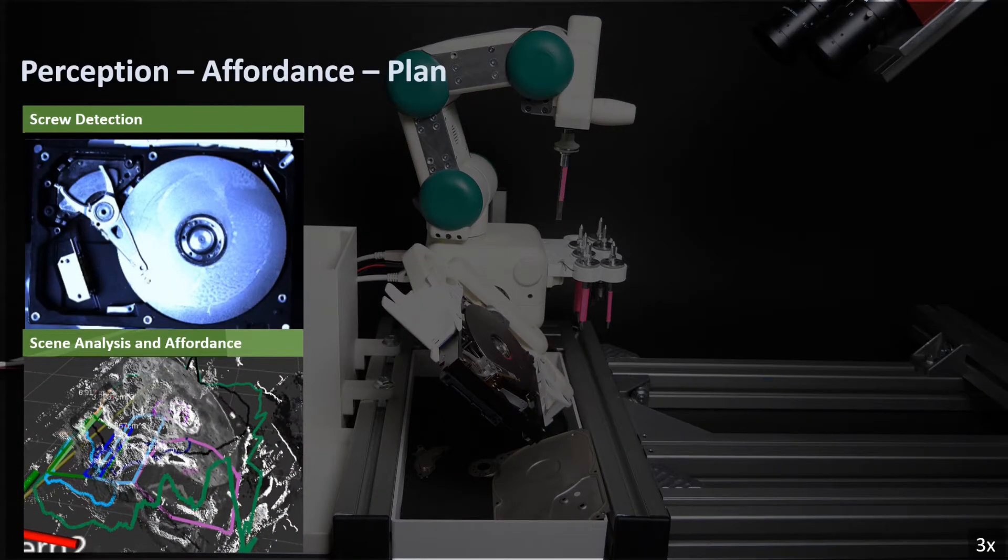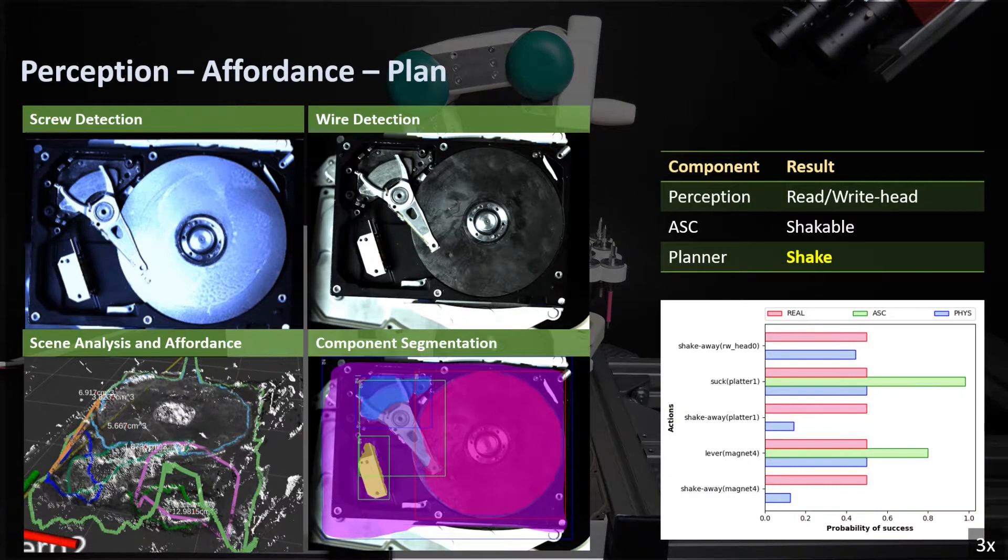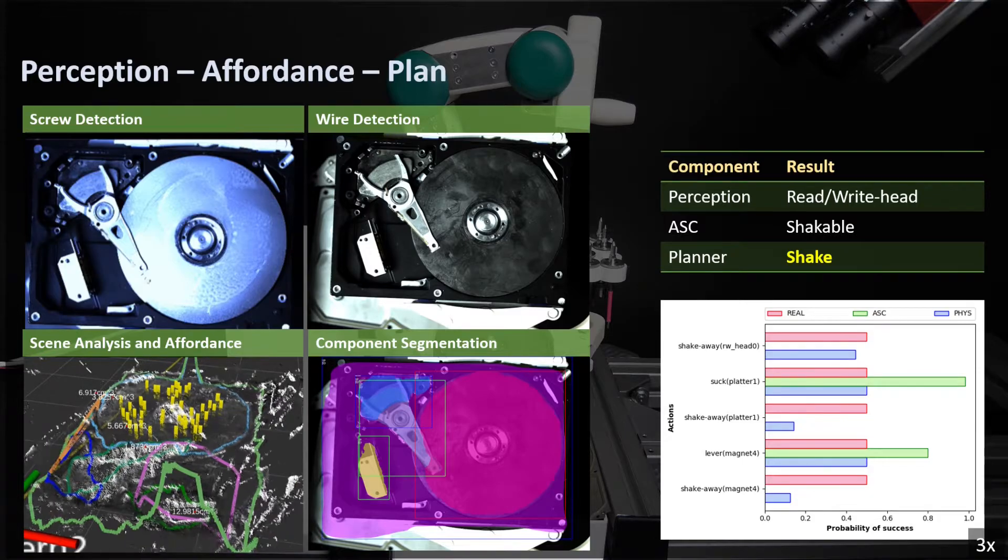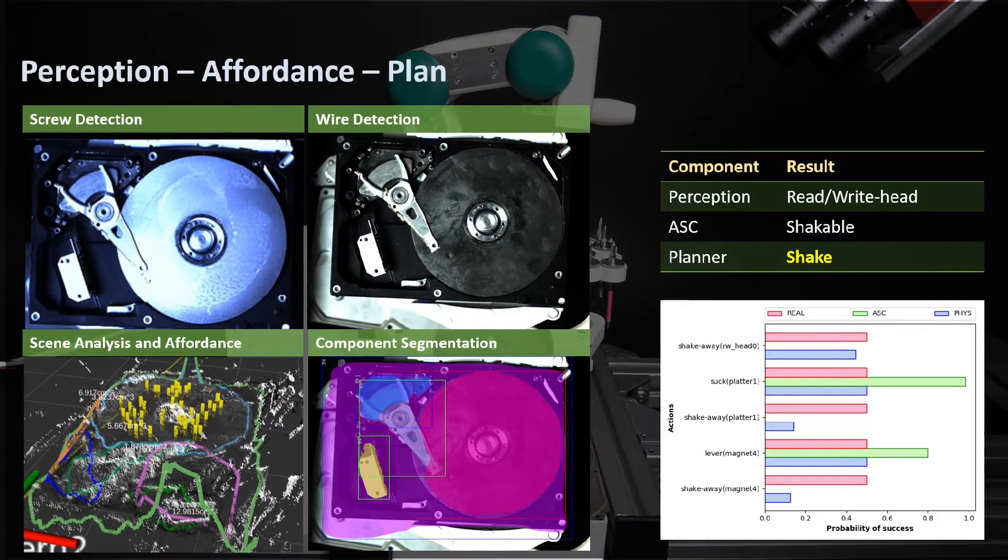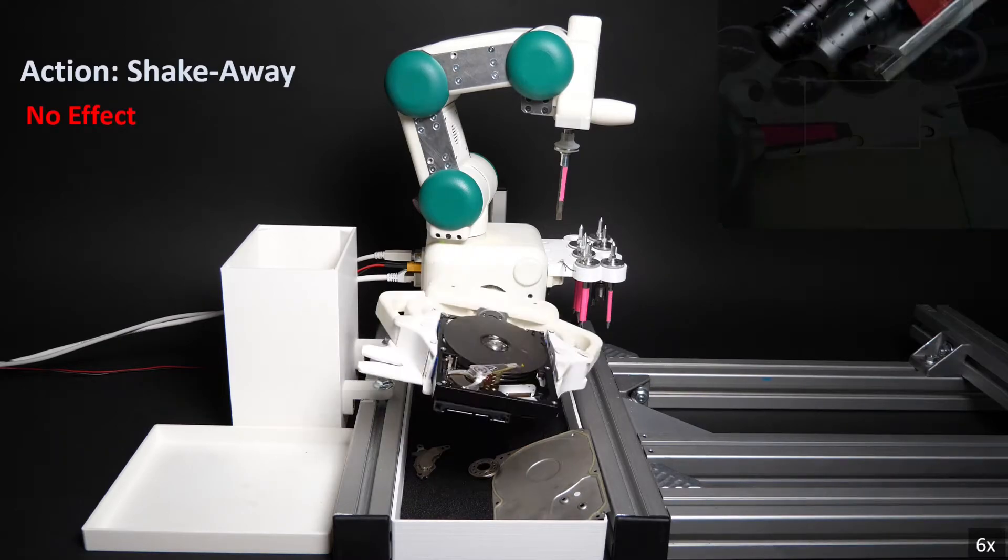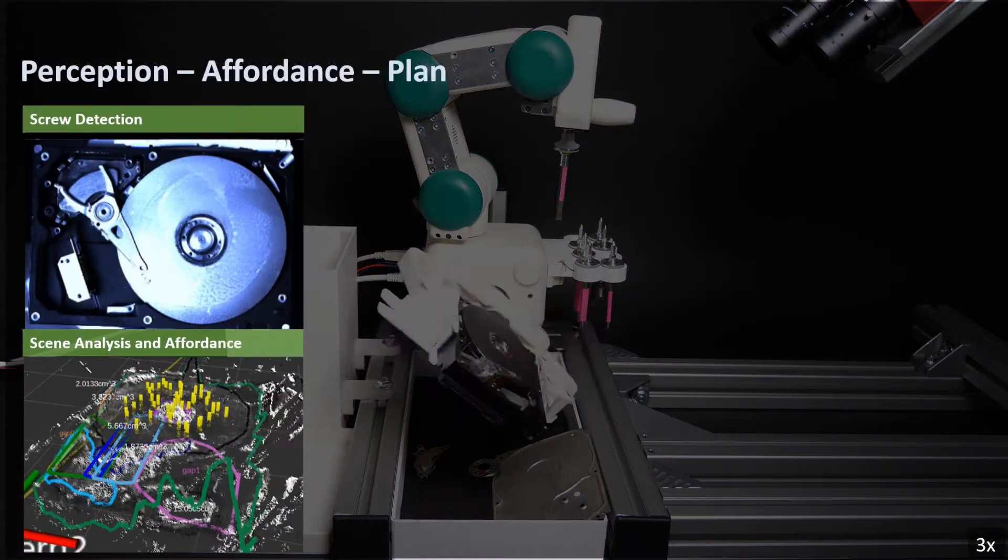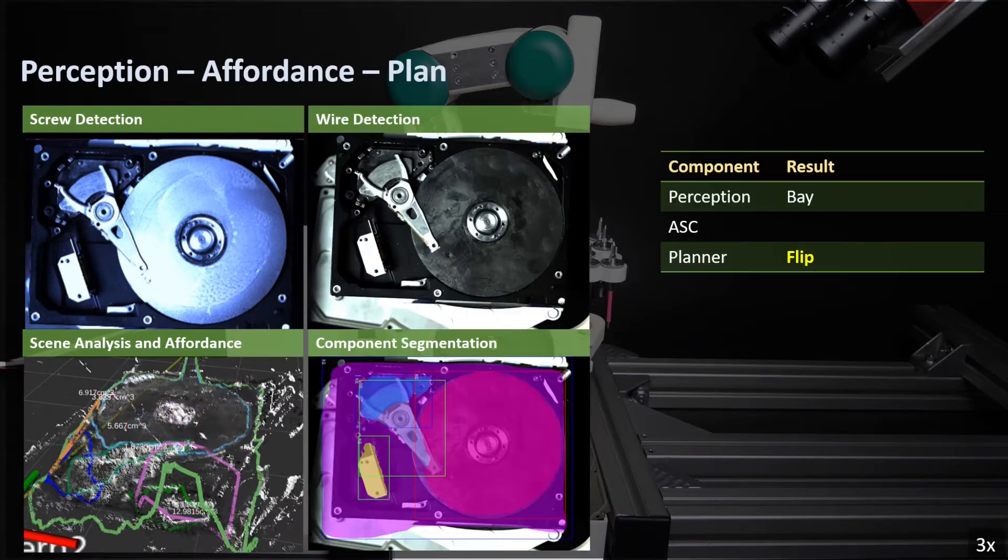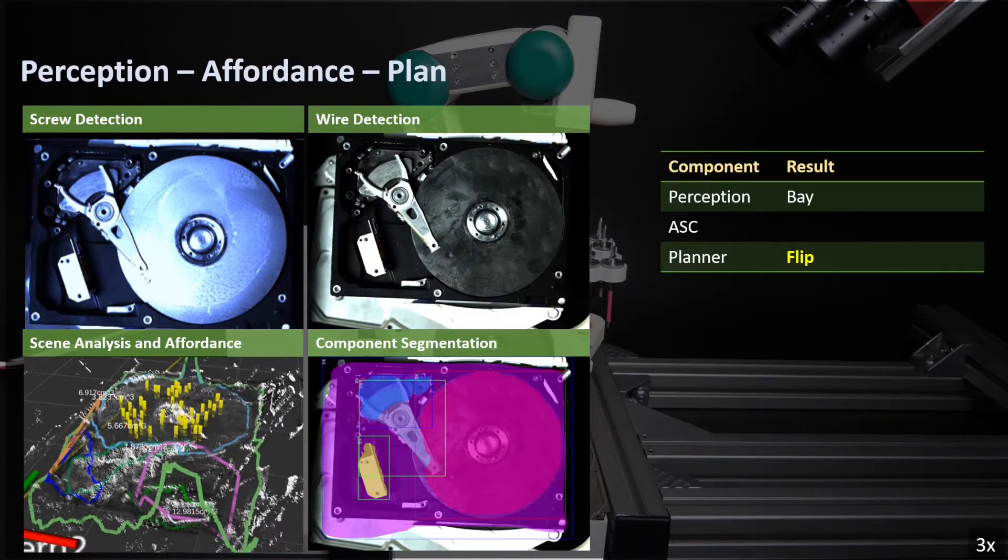In this new scene, the read-write head is occluding the platter and the bottom magnet, so the planner sees it as the only viable parts to target, and shaking is the only available action for the read-write head. Since shaking doesn't take any effect, the planner assumes that there should be some hidden task on the bottom side and flips the device.